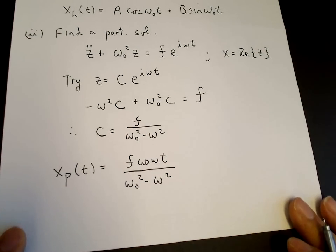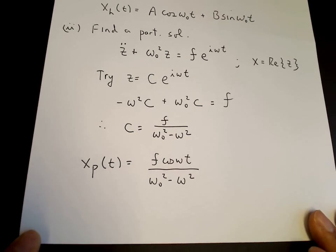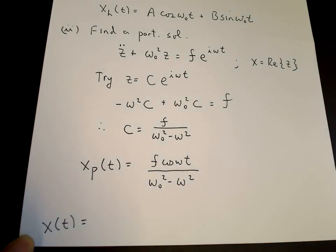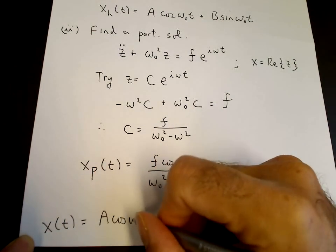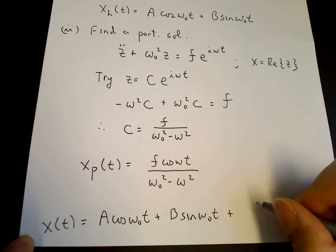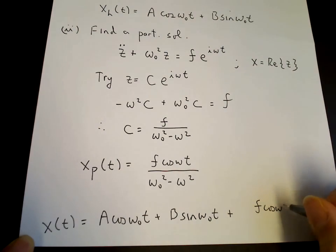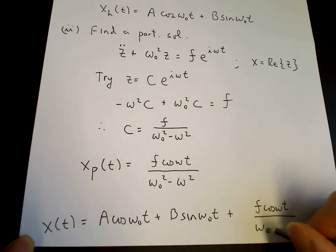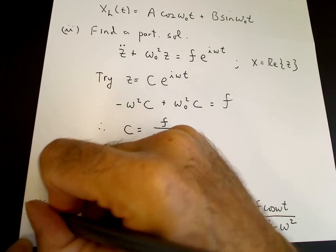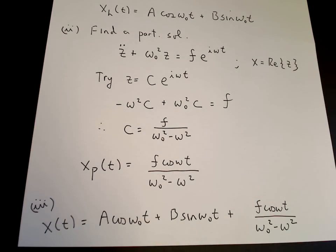Putting together the homogeneous and particular solutions, we get x of t equals a cosine omega-naught t plus b sine omega-naught t plus f cosine omega t over omega-naught squared minus omega squared. The final step is to satisfy the initial conditions using this combined solution.